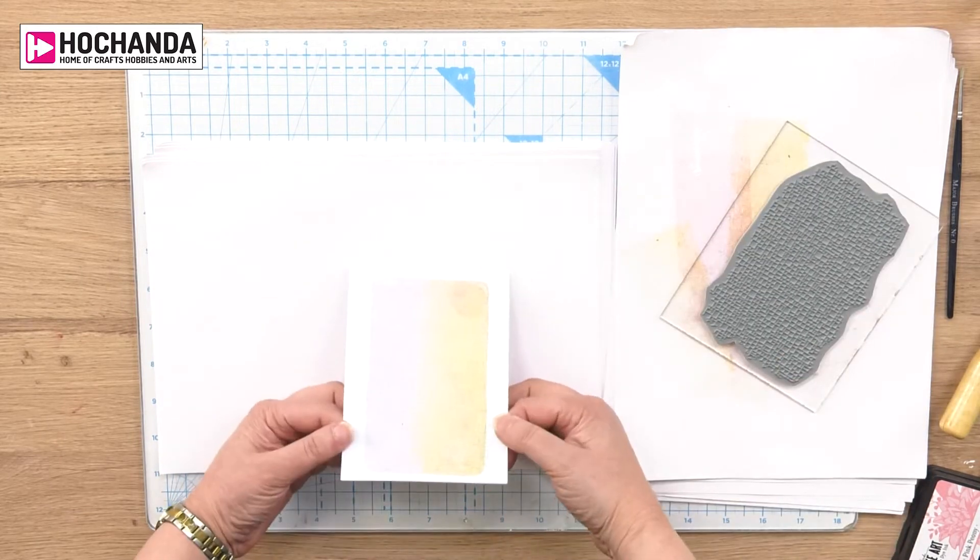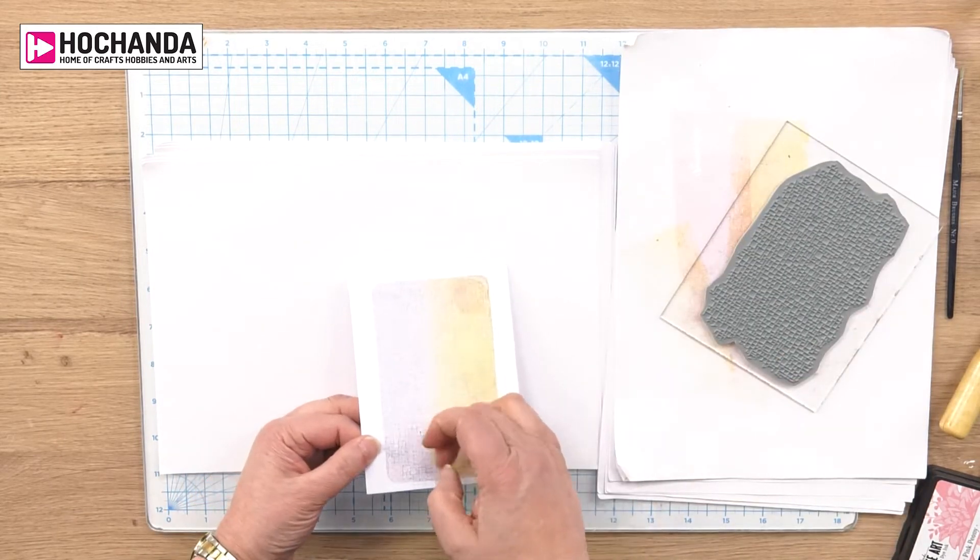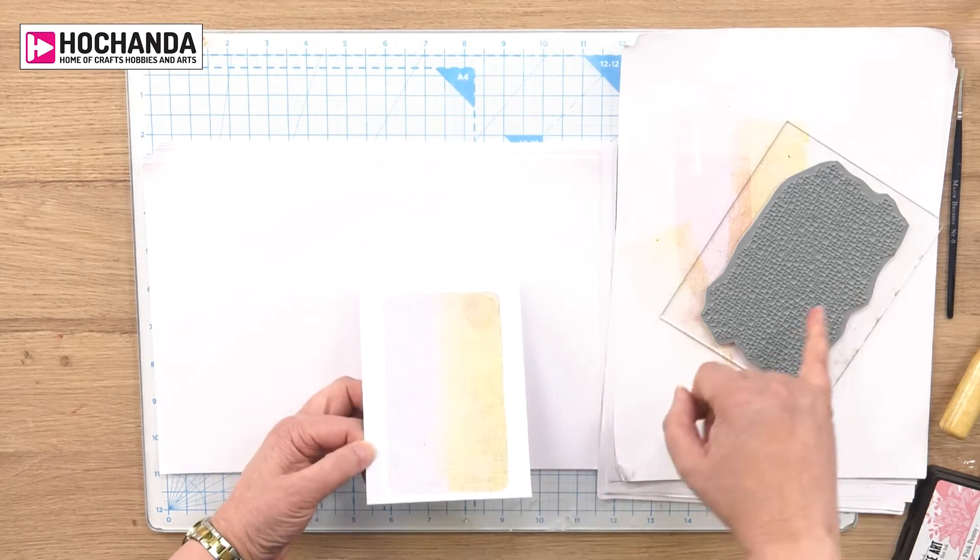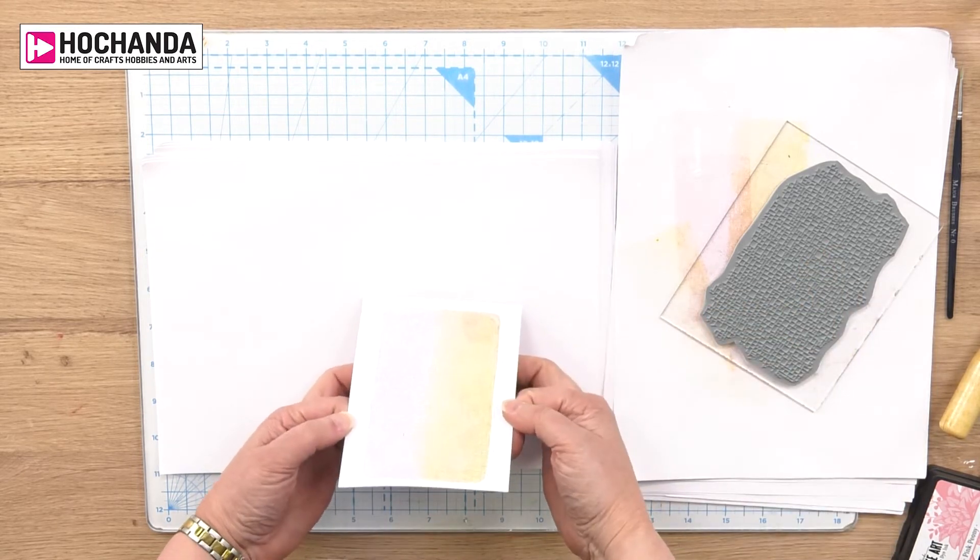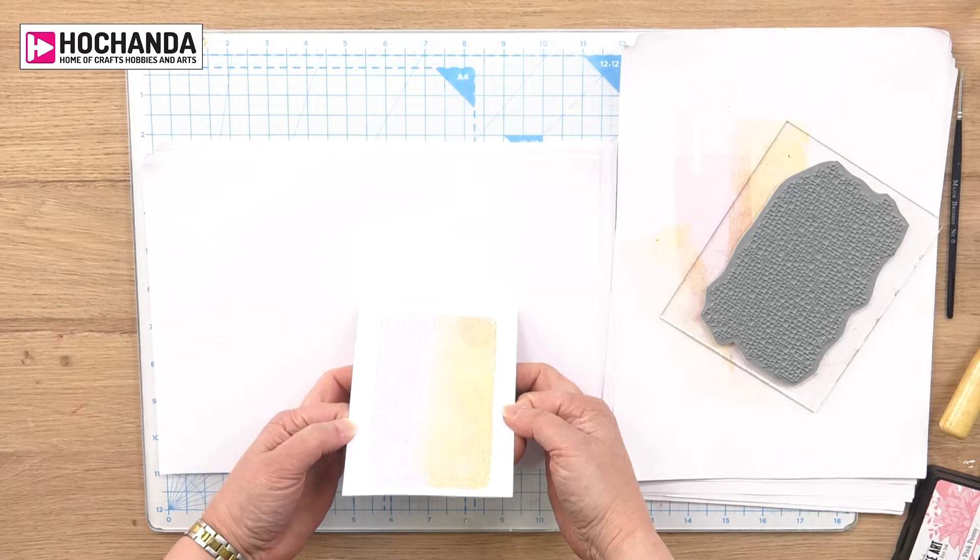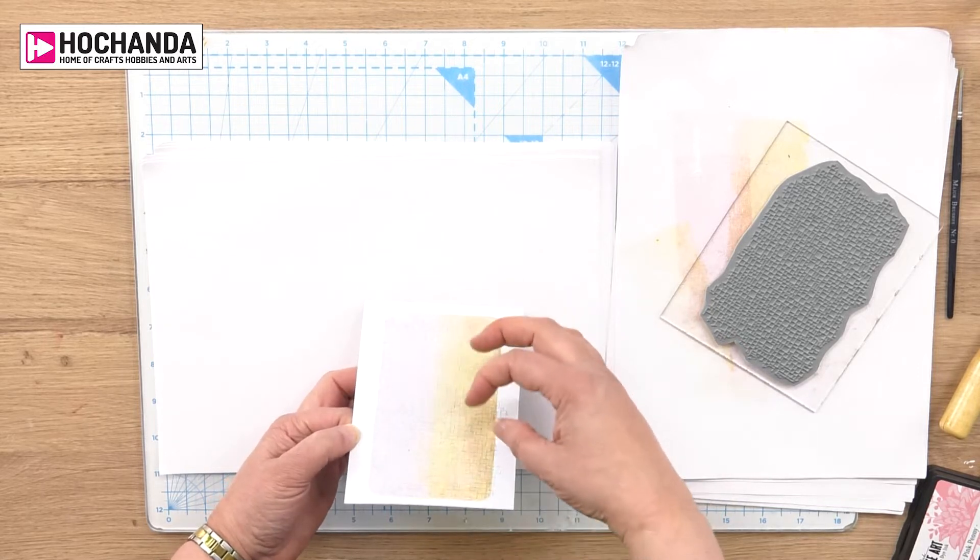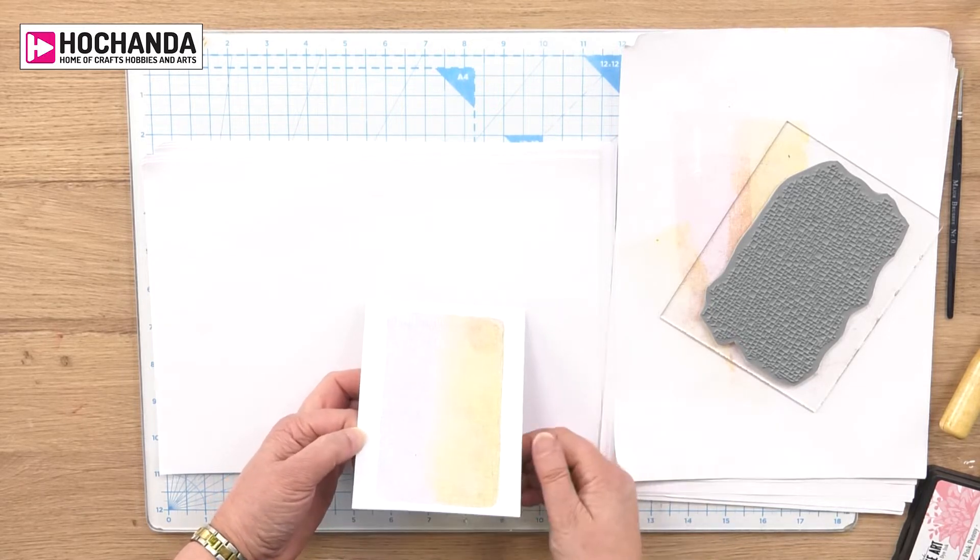There you go. So there is the pattern over the top, don't worry about that extra bit, I think I had something stuck to the ink pad. So you've now got depth in the background, you've got that to the front, you've got the color in the back.